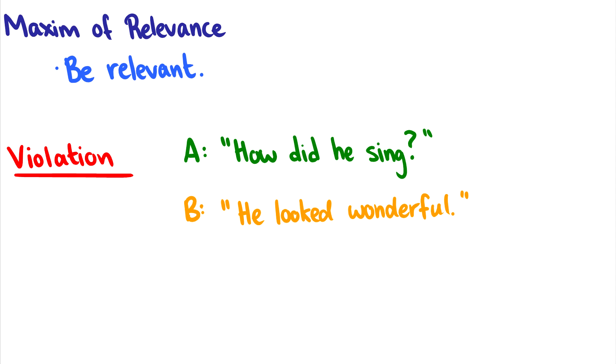Now this maxim is usually violated when we want to be polite. And I know this sounds weird. Wait, we're violating a principle of conversation that's supposed to be beneficial to be polite. Well, here's an example. How did he sing? Oh, he looked wonderful. Notice how B is not being relevant at all. We're asking about singing and B is responding that he looked wonderful. But what's really being said here? What is B saying? Well, B is saying that he sang terribly, but he doesn't want to say it directly. So by being irrelevant, by making a statement that has nothing to do with the conversation, B is expressing that someone's singing really, really badly, but they're too polite to say it directly.